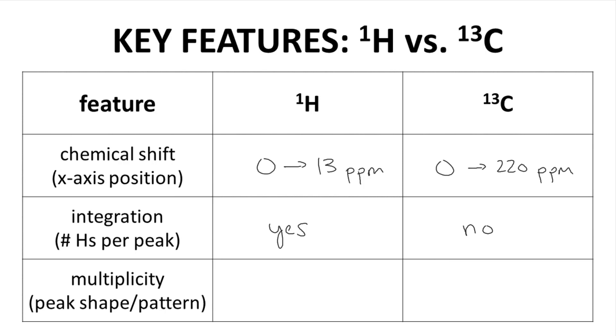Finally, let's consider multiplicity. In a proton spectrum, peaks have characteristic shapes and patterns – singlet, doublet, triplet, etc. – that are useful for understanding how many neighboring hydrogens are present. The multiplicity of peaks provides much valuable connectivity information in a proton spectrum.